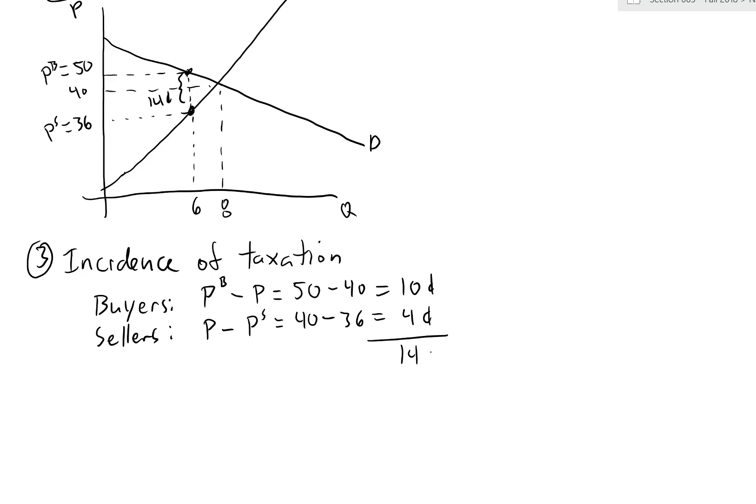The buyer's share and seller's share must add up to the full 14 cent tax — 10 plus 4 equals 14 — so if they don't add up, you've made a mistake somewhere. We can see that buyers are paying most of the tax, which indicates they have a relatively inelastic demand curve relative to the supply curve. And that's how you algebraically solve the incidence of taxation.